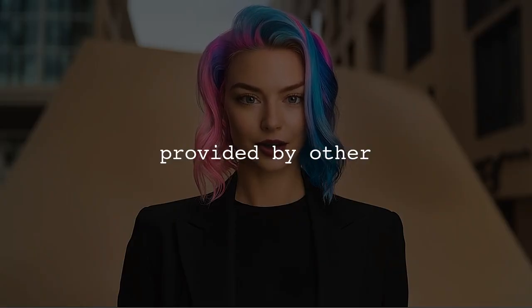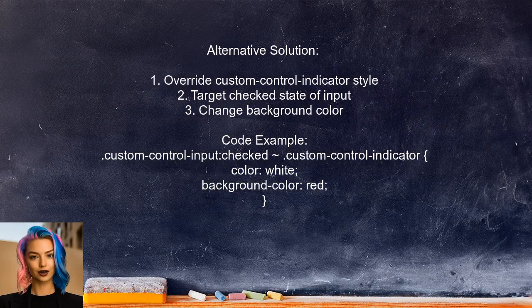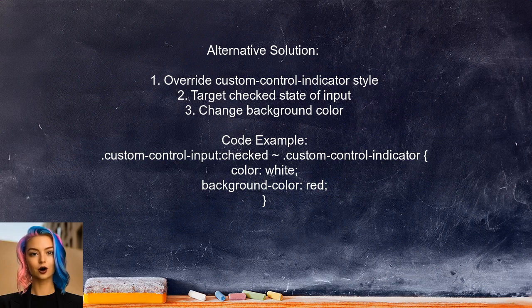Now let's look at the answers provided by other users. An alternative approach to styling a custom checkbox in Bootstrap 4 is to override the custom-control-indicator style. You can achieve this by targeting the checked state of the input and changing the background color.